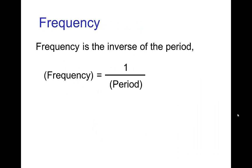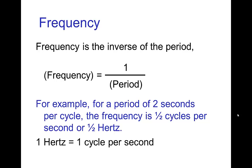A closely related element is the frequency for a cycle. The frequency is just the inverse of the period. So for example, if something has a period of two seconds per cycle, then the frequency is half a cycle per second. Frequency is measured in cycles per second, called hertz, so half a cycle per second is the same as one half hertz.